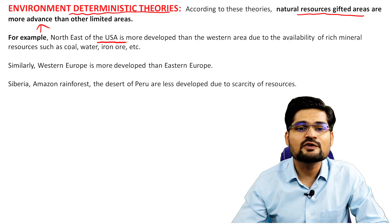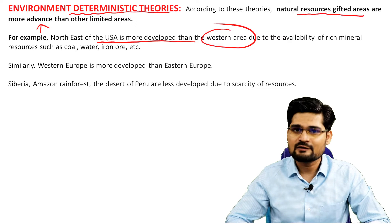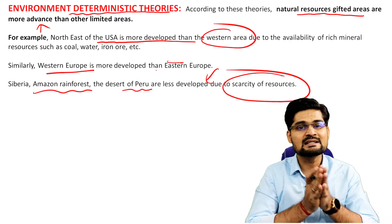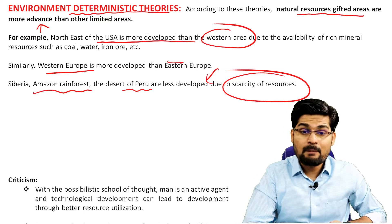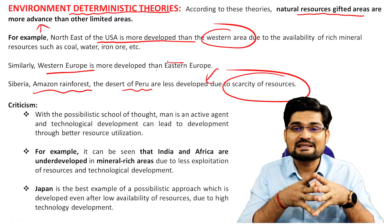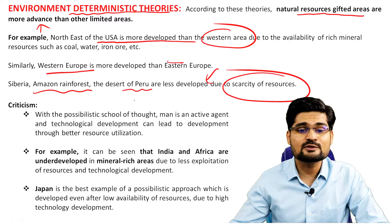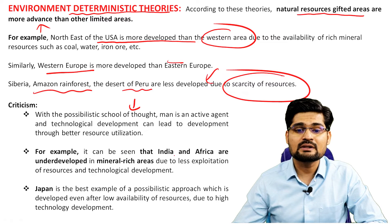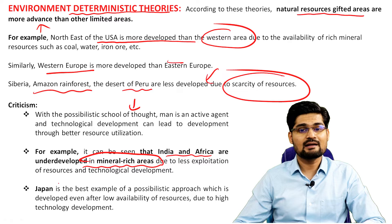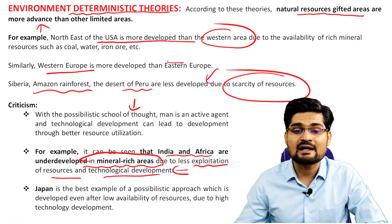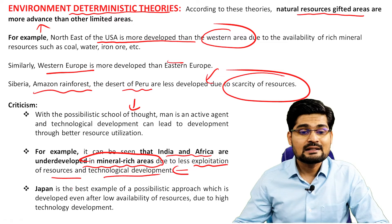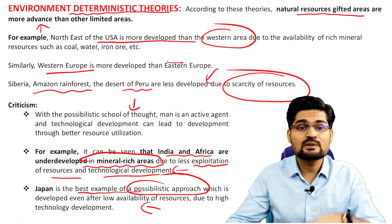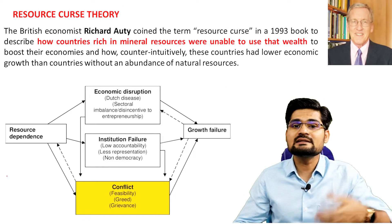For example, the North East of the USA is more developed than other parts because it has rich mineral resources. Similarly, Western Europe is more developed, while the Amazon rainforest and the desert of Peru are less developed due to scarcity of resources. The criticism is that this pattern doesn't hold everywhere. The possibilistic school of thought says man is an active agent and doesn't just obey nature. India and Africa are underdeveloped in mineral-rich areas due to less exploitation of resources and lack of technological advancement, not just availability. Japan is the best example of the possibilistic approach — not much natural resources but strong human resources.